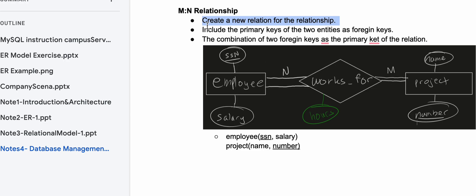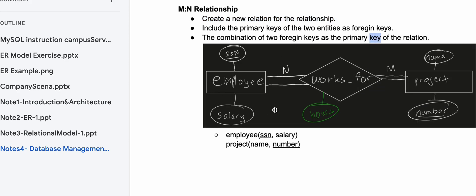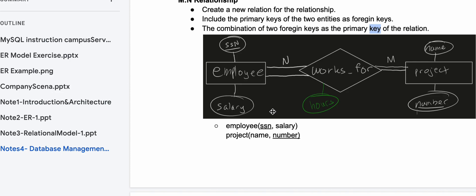We're going to create a new relation. We need to include the primary keys of the two entities as foreign keys, with the combination of the two foreign keys as the primary key of the relation, and we're going to look at this in this example here.